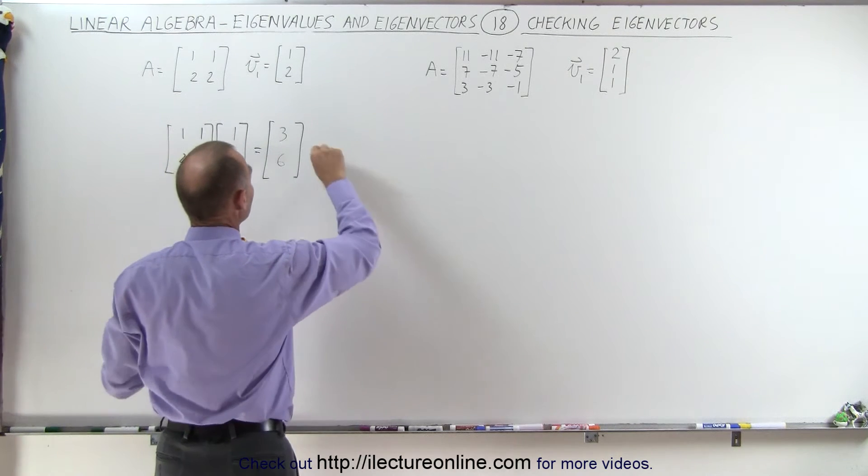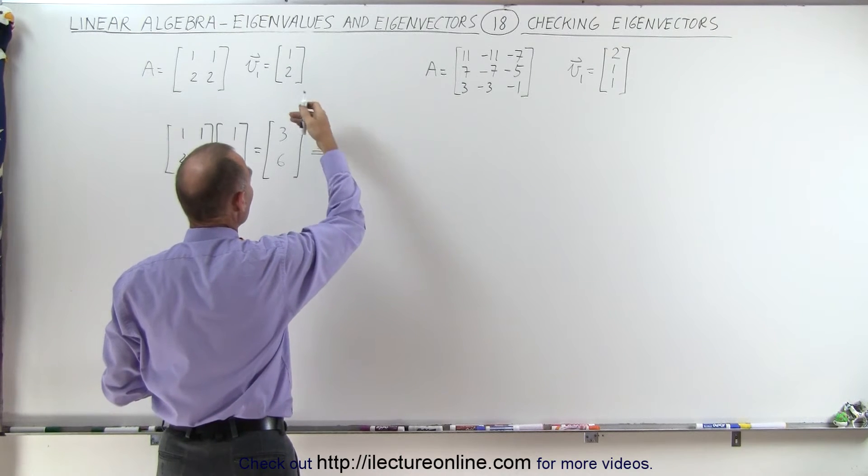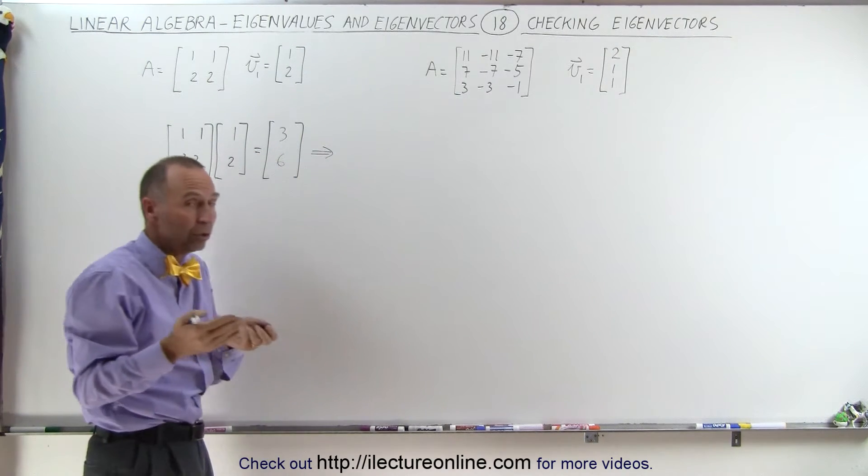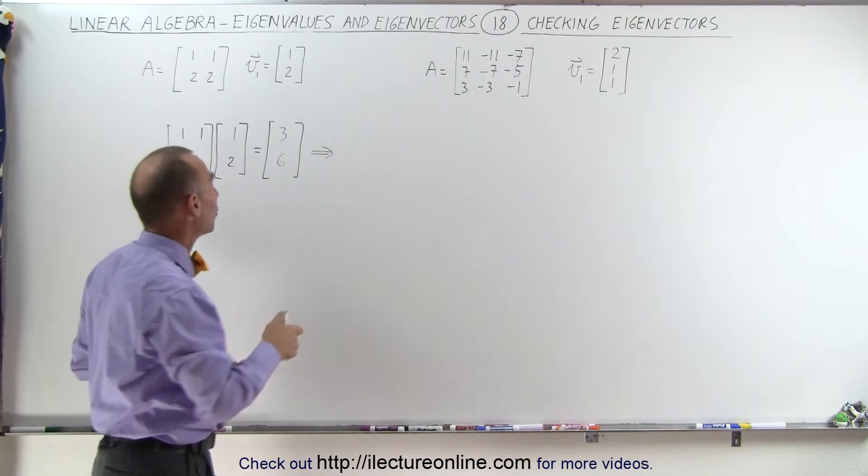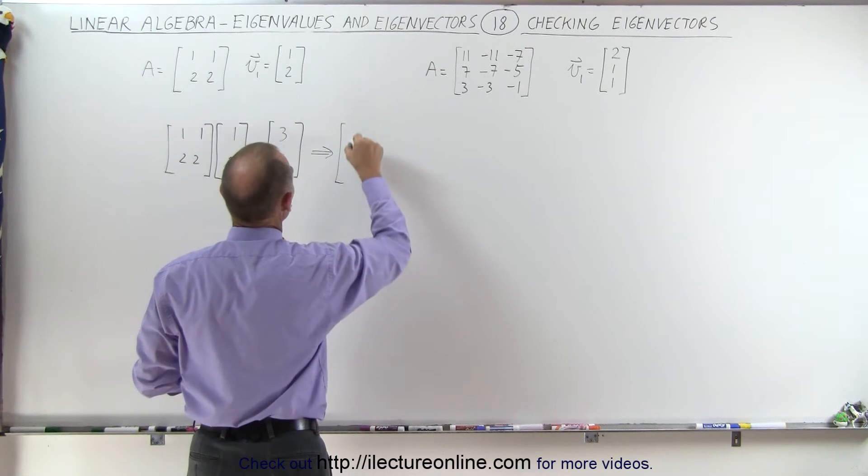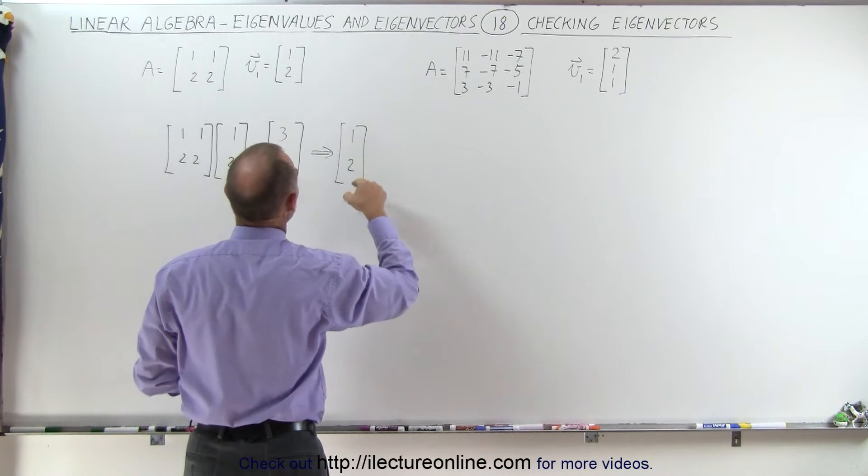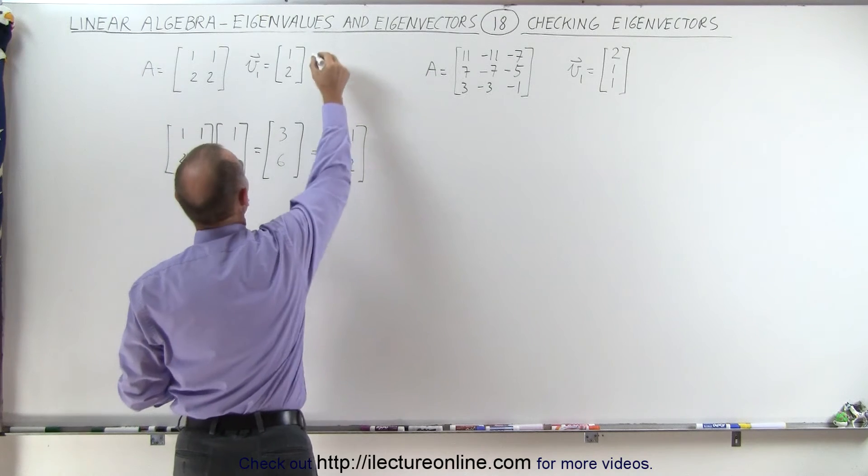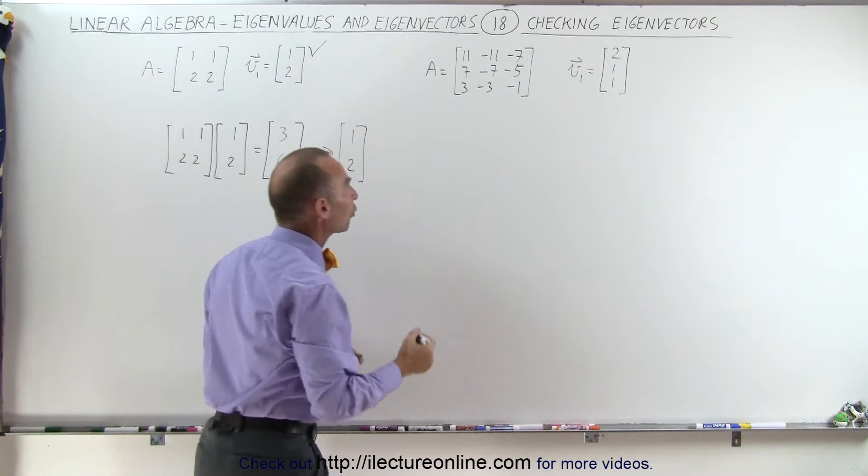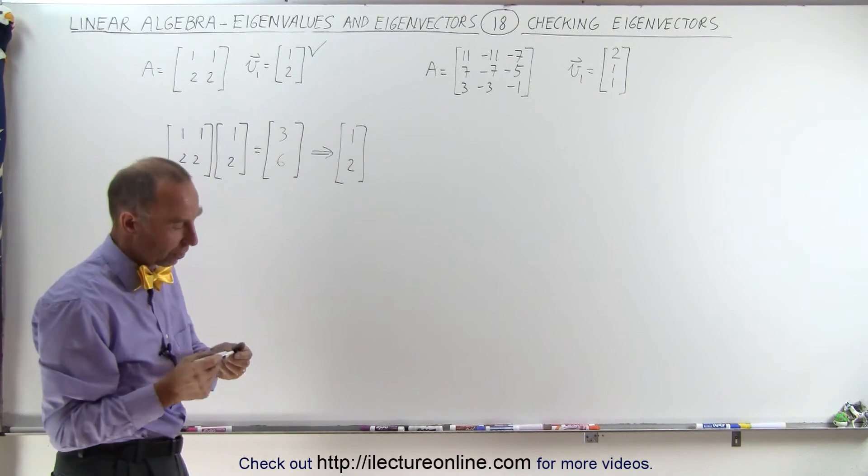So therefore this can be simplified by dividing both the top and the bottom by 3, because after all these are ratios between x and y values. This can be written as 1 over 2 which gives us back the original eigenvector, which means that this is a legitimate correct eigenvector for that matrix.